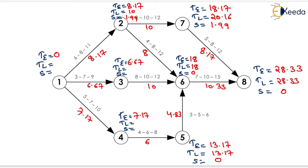The TL value for event 4 will be equals to 13.17 minus 6, which equals 7.17, and the slack will be equals to 0. The TL value for event 3 will be equals to 18 minus 10, which equals 8, and the slack will be equals to 1.33. Now the TL value for event 1 will be equals to 10 minus 8.17, or 8 minus 6.67, or 7.17 minus 7.17 — the minimum value will be the TL and it will be equals to 0, so slack will be equals to 0.